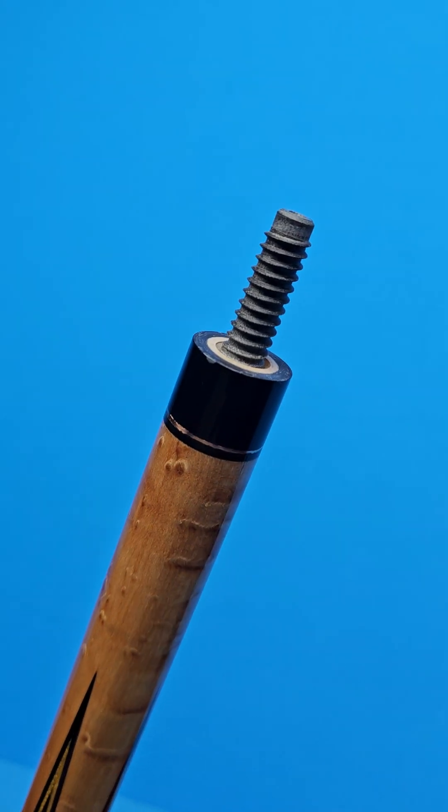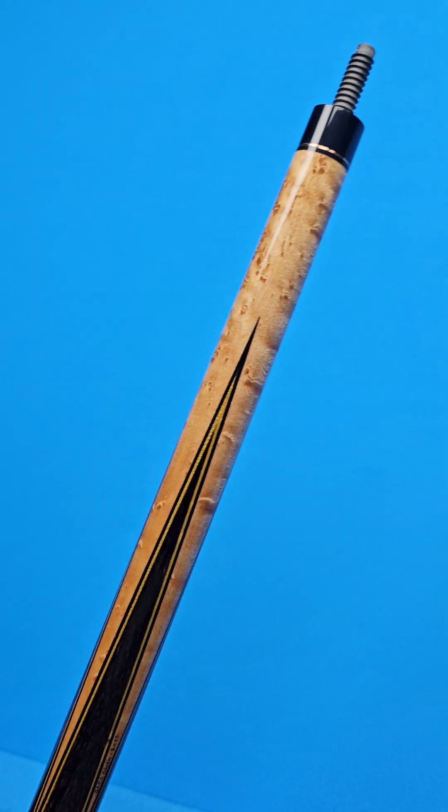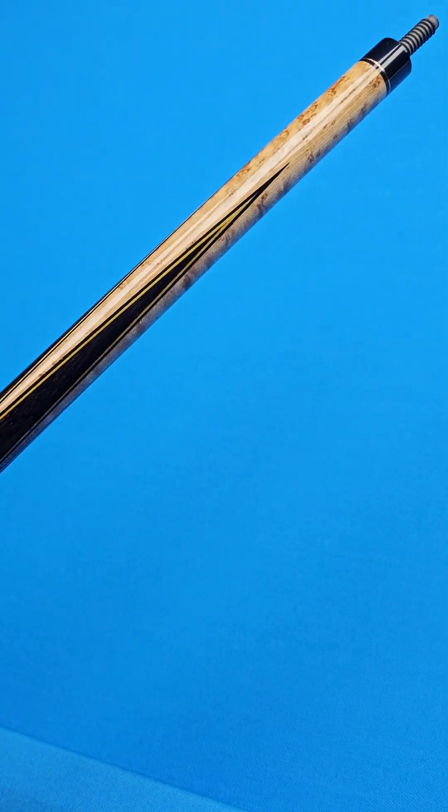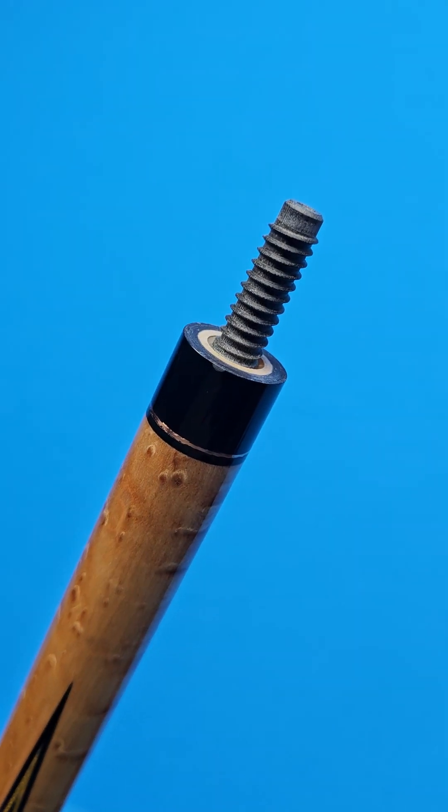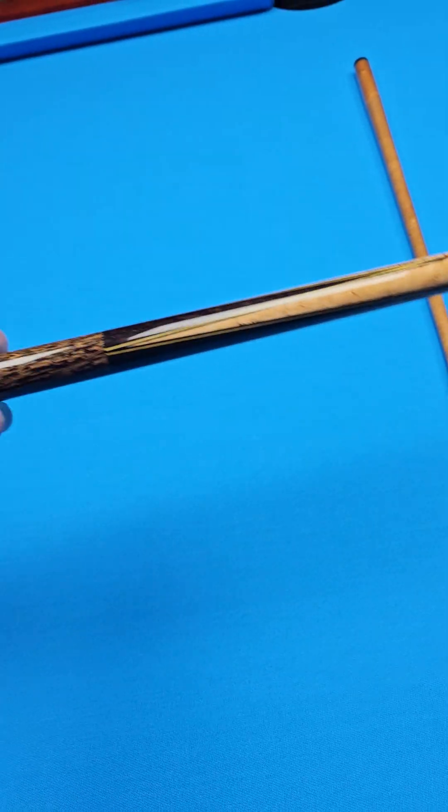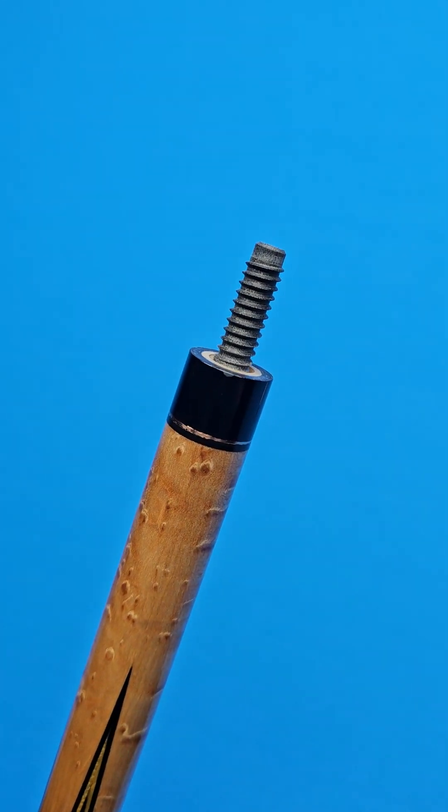The G10 material is just a lighter weight. So a lot of times, especially if you're dealing with a heavier wood up front. Now this wood, Birdseye, is not necessarily heavy. This is also cord. So a lot of times if the cue has a really heavy weight up front, they'll use the G10. That way it's not too forward balanced. So you want a little bit of forward balance, but you don't want the cue to just be really, really, really top heavy. So that's the most common reason why they use the G10.